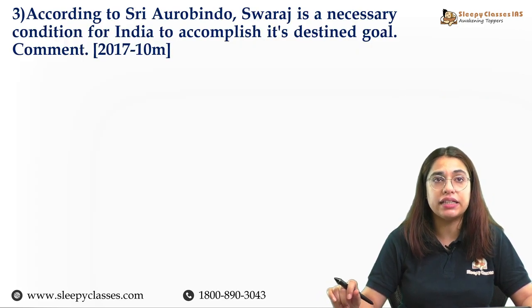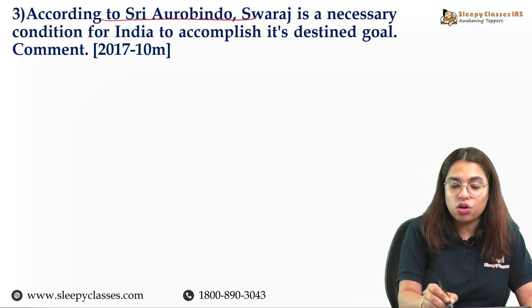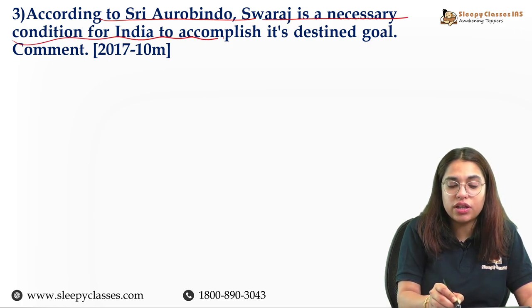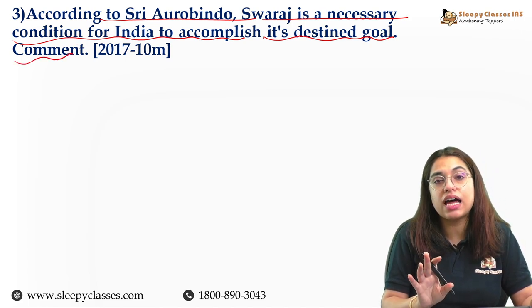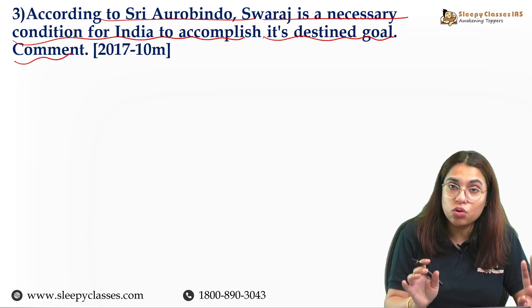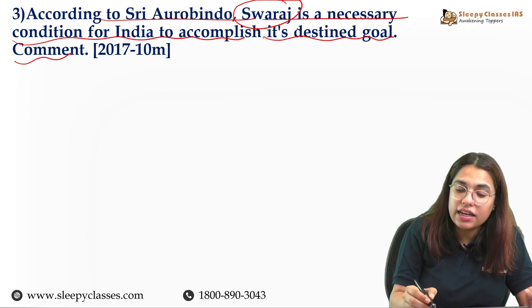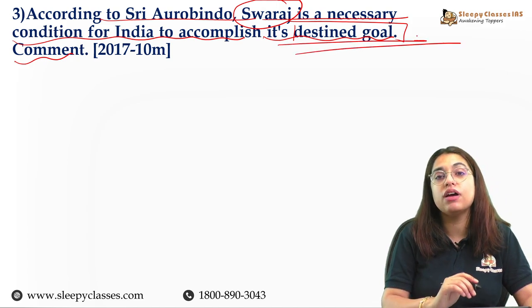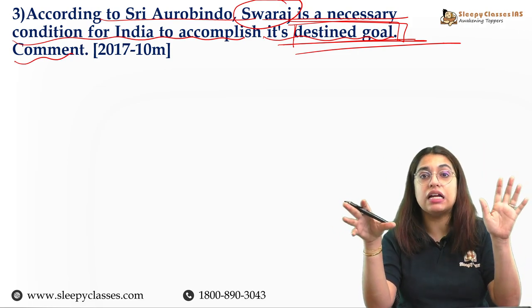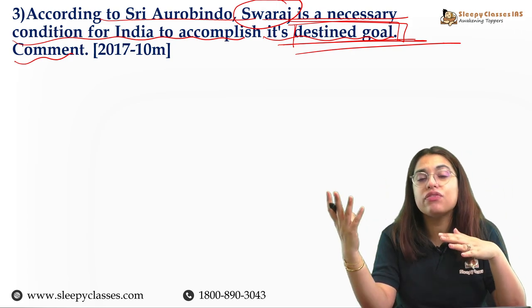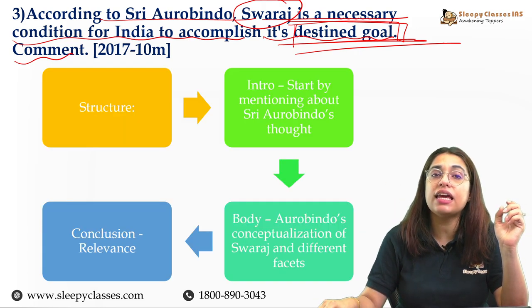Let's move on to the next question, which came in 2017 and was a 10-marker: 'According to Sri Aurobindo, Swaraj is a necessary condition for India to accomplish its destined role — comment.' The question is not simply asking what Swaraj is; it is asking that according to Aurobindo, Swaraj was the main criteria through which India could achieve its destined goal — basically to lead the whole world's countries towards a better way of life.